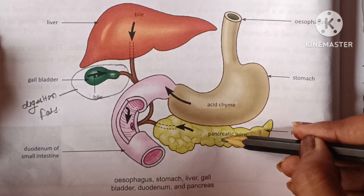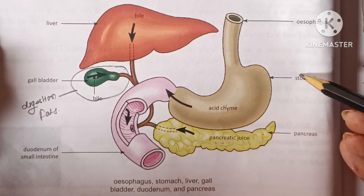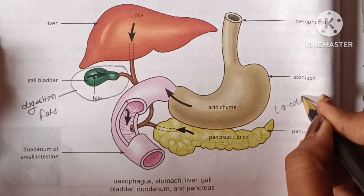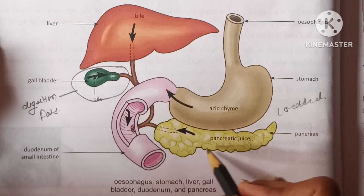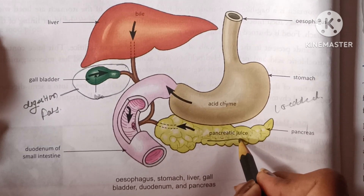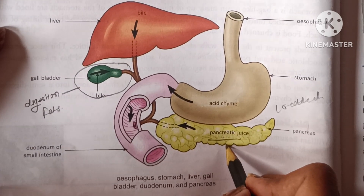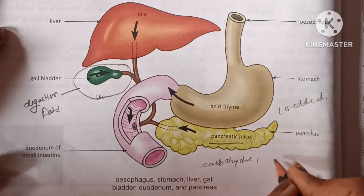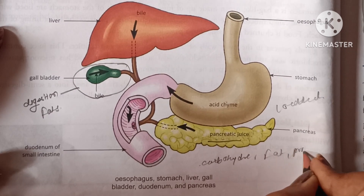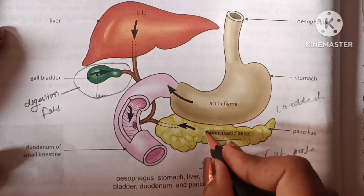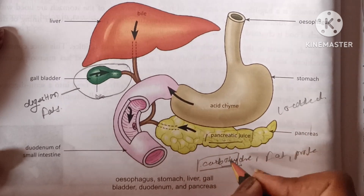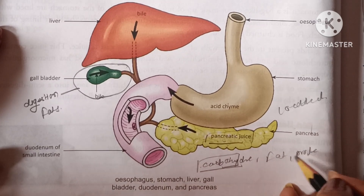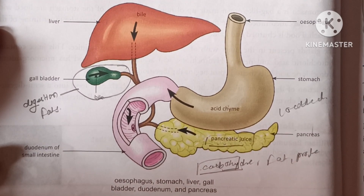The pancreas is a large gland located below the stomach. The pancreas secretes pancreatic juice, and this pancreatic juice digests carbohydrates, fats and proteins. It breaks down fats, carbohydrates and proteins into simple, usable substances.